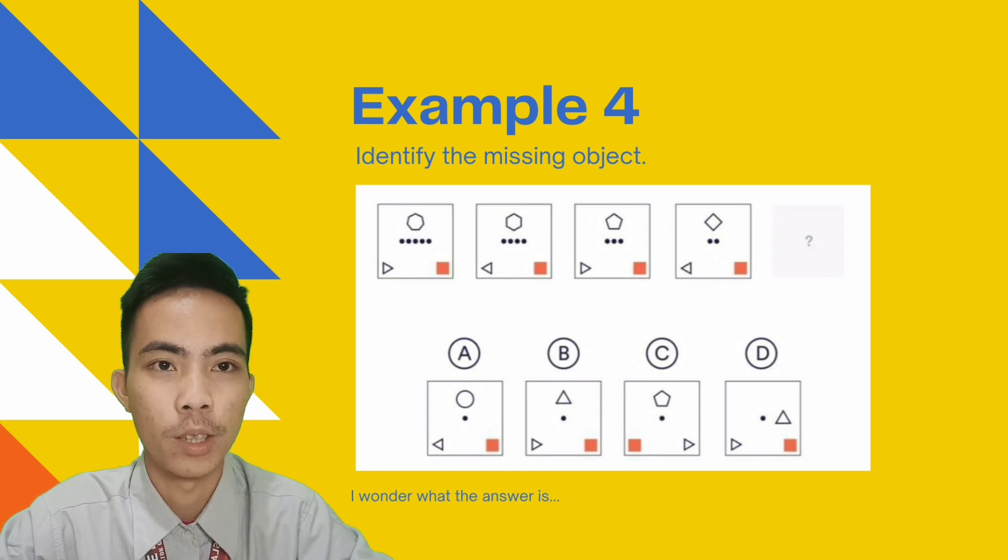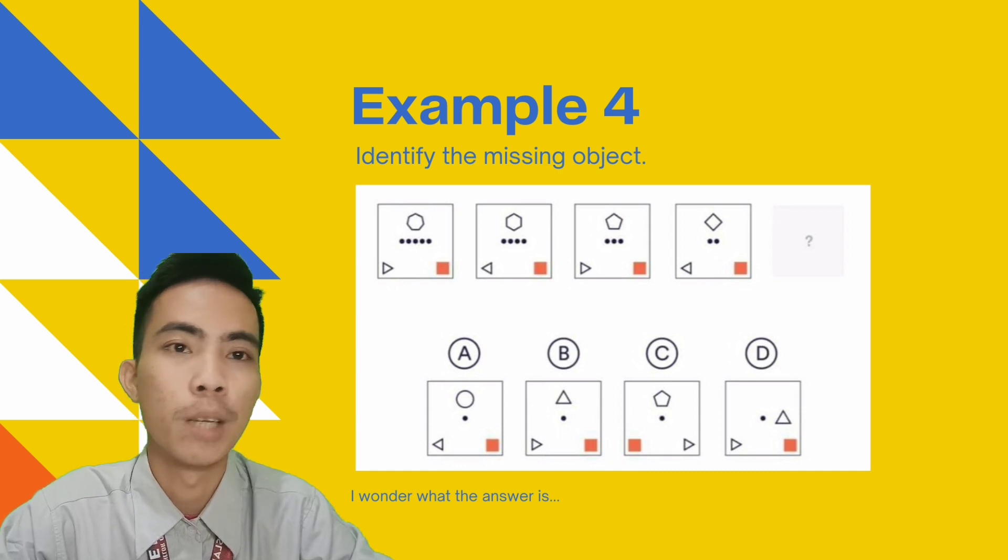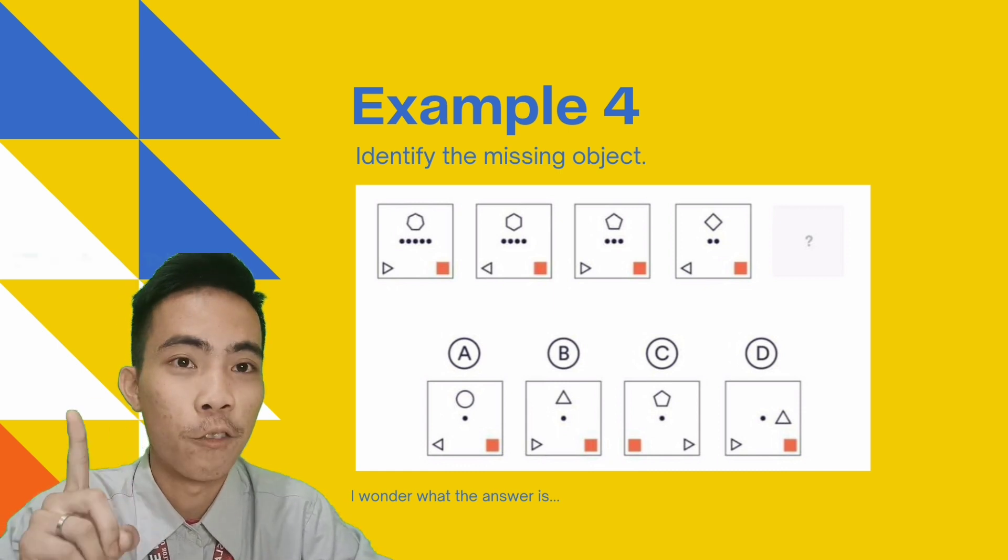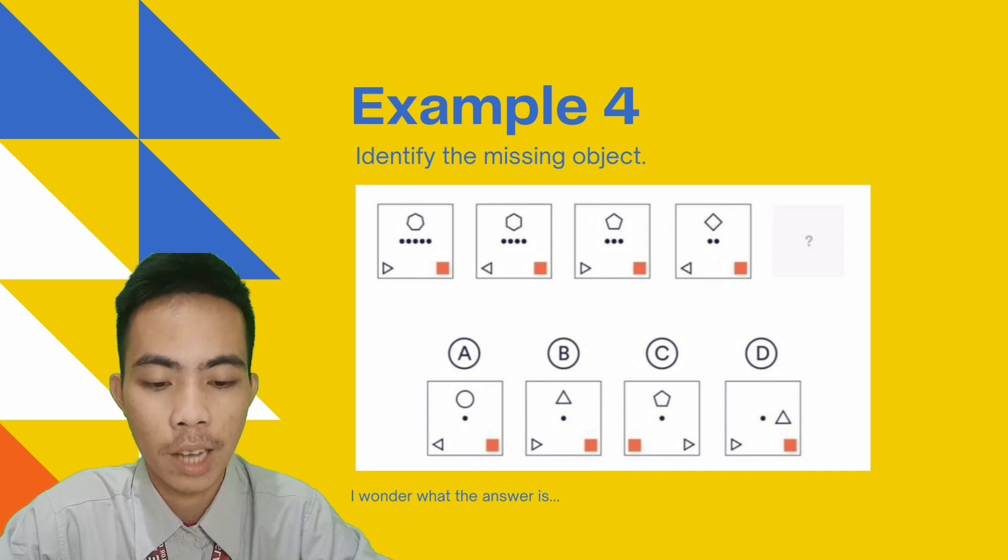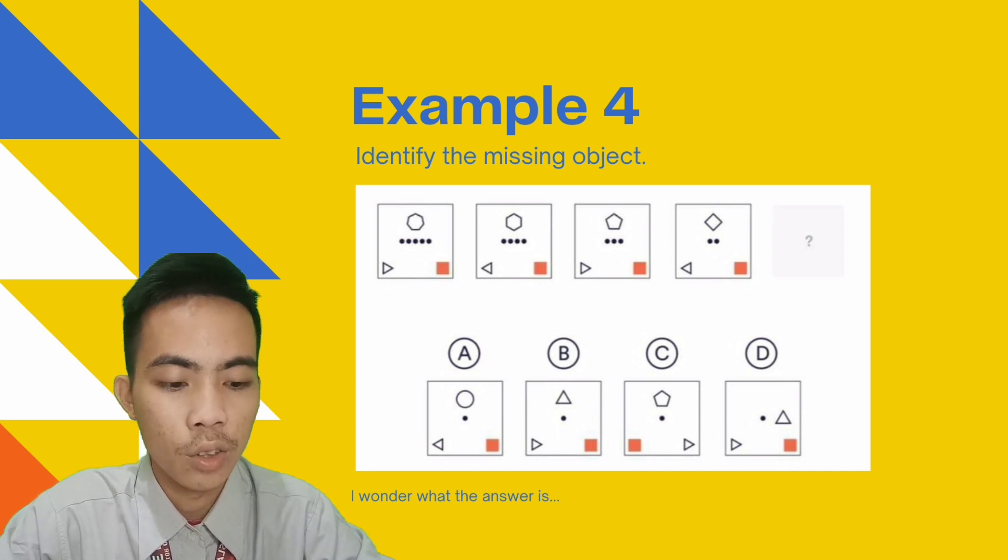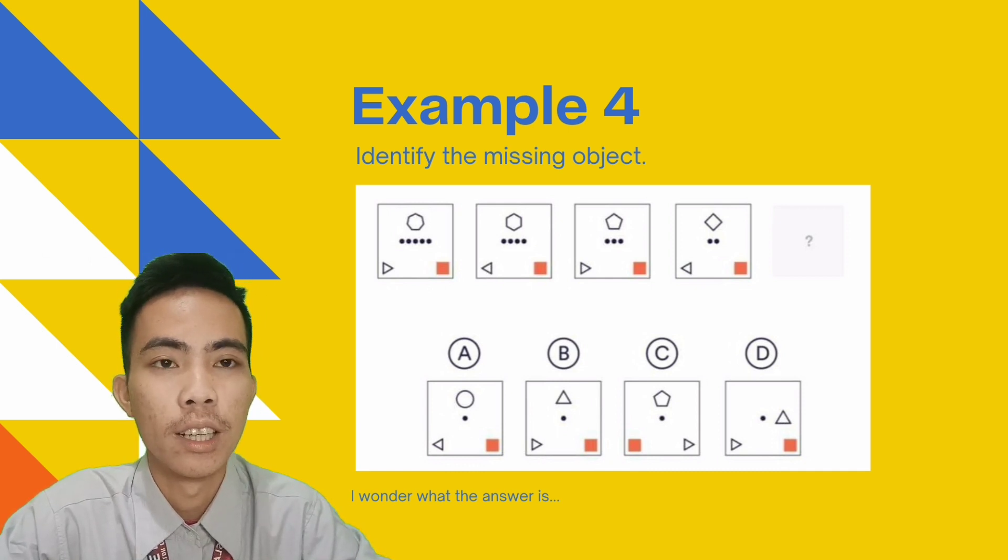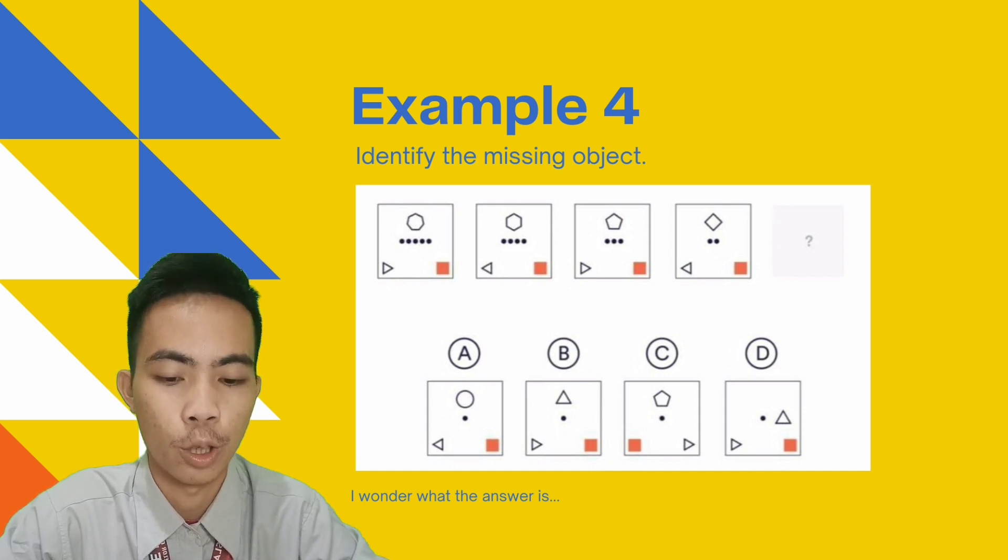We have here four choices: A, B, C, and D. So, let us do some eliminations first. As you can see in the first figure for choice A, we have a circle which does not follow the idea of sides and angles of the shapes. And the small triangle located below is redundant to the small triangle located below from the preceding figure. So, therefore, choice A cannot be the pattern or the figure we are looking for.